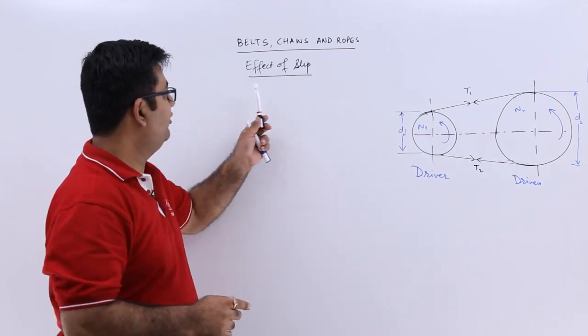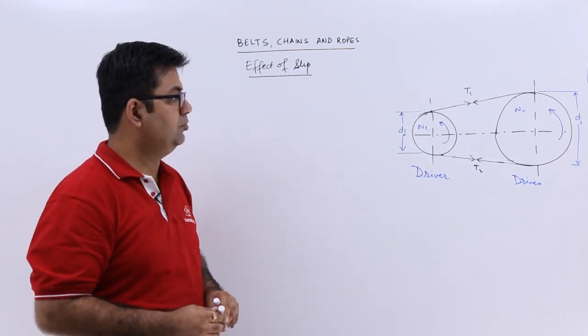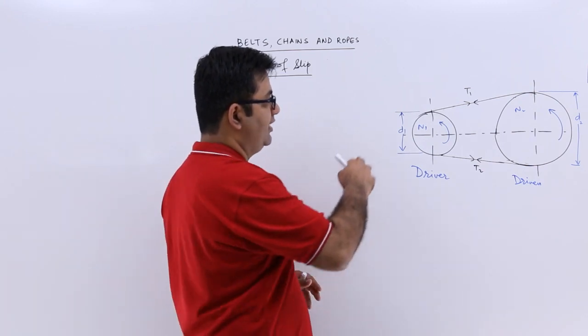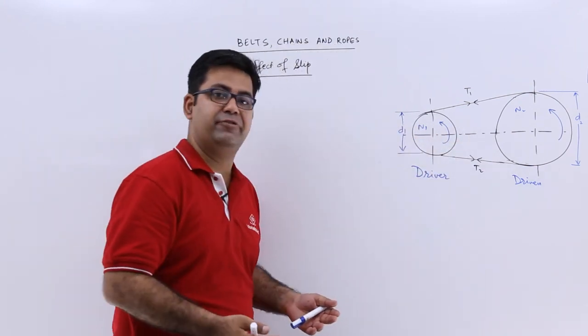Now in this video we look at the effect of slip on the velocity ratio. This is the same diagram as in the previous video.